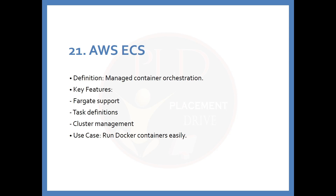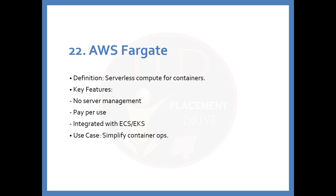The 21st service is AWS ECS. The definition is: a managed container orchestration service. Key features include Fargate support, task definitions, and cluster management. The use case is running Docker containers easily. The 22nd service is AWS Fargate. The definition is: serverless compute for containers. Key features include no server management, pay-per-use pricing, and integration with ECS or EKS. The use case is simplifying container operations.